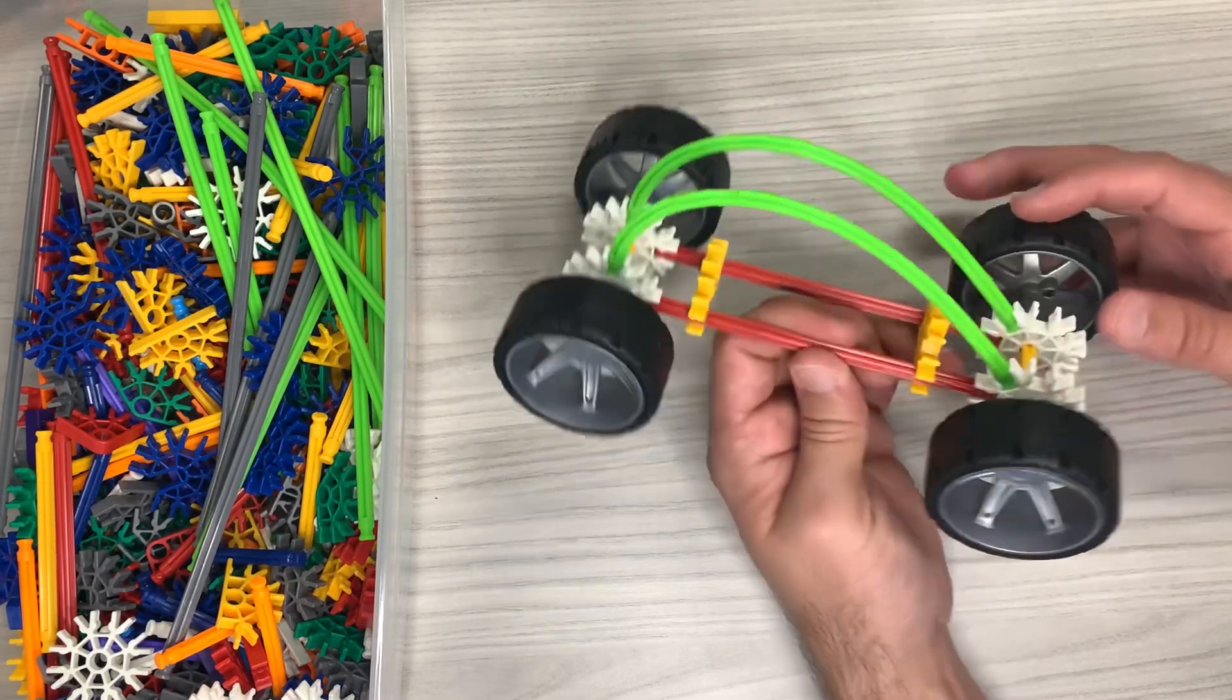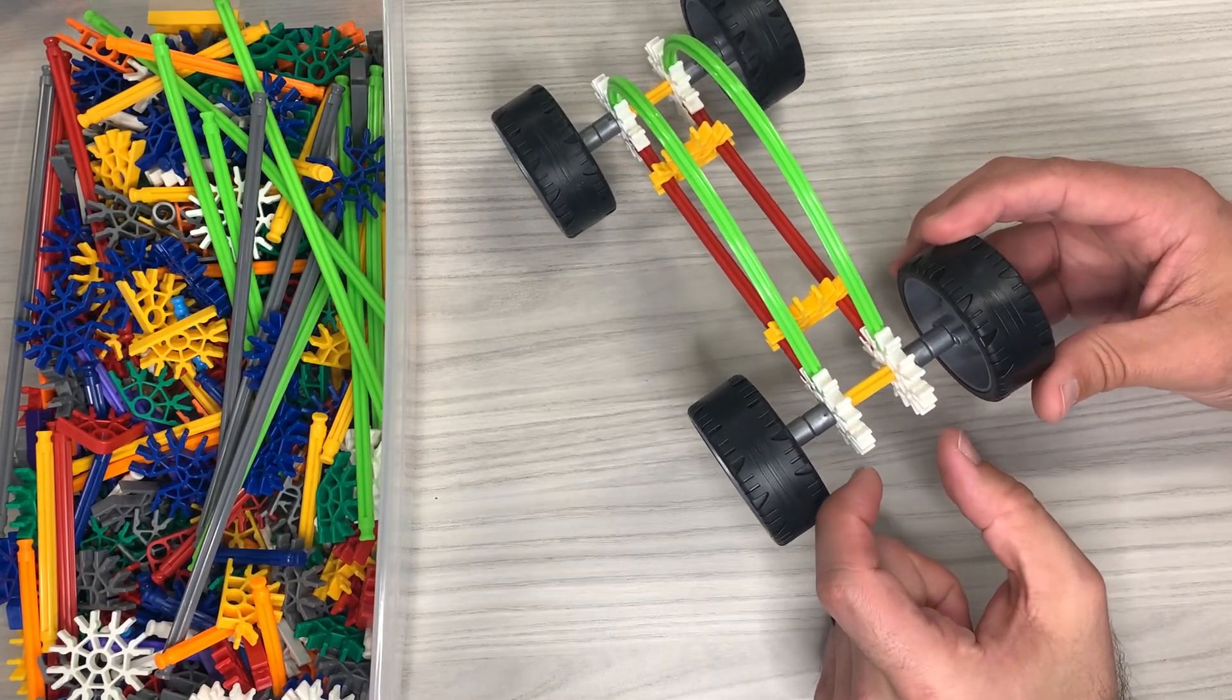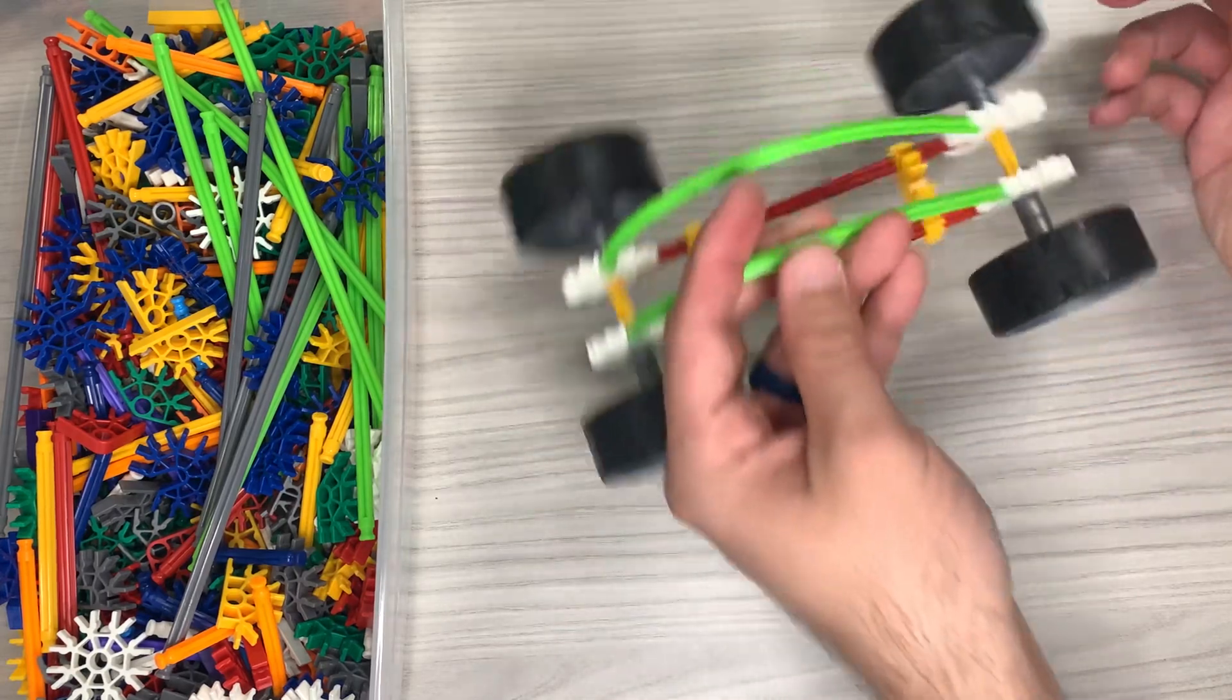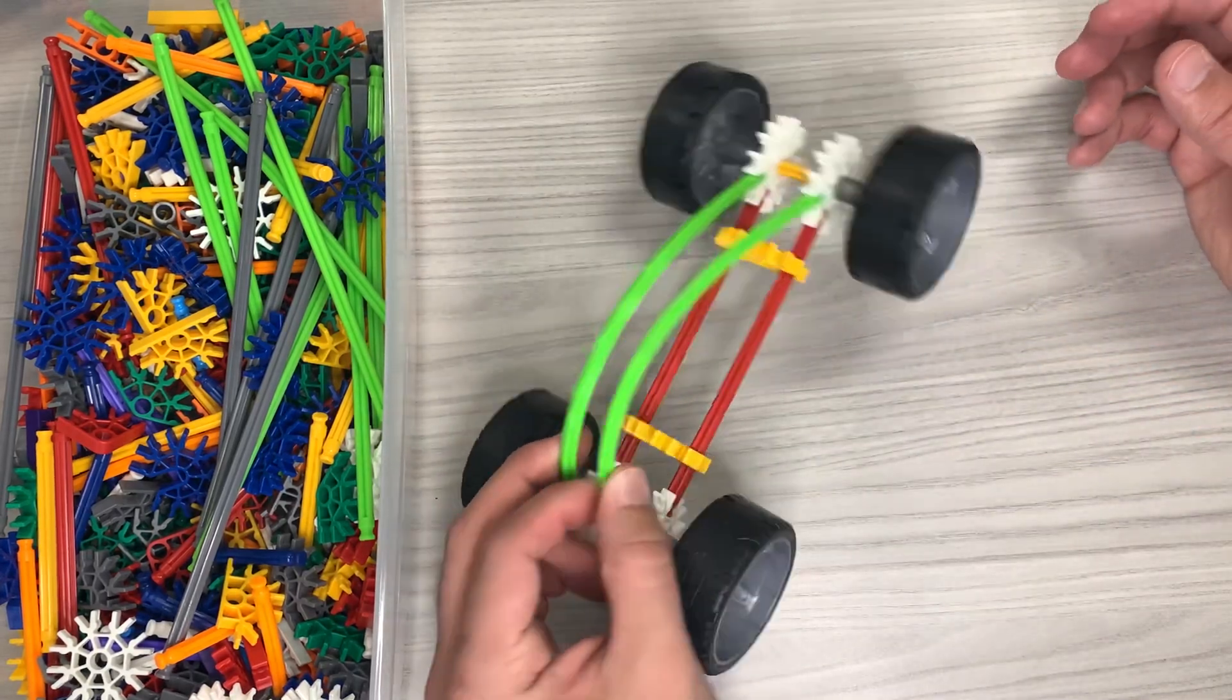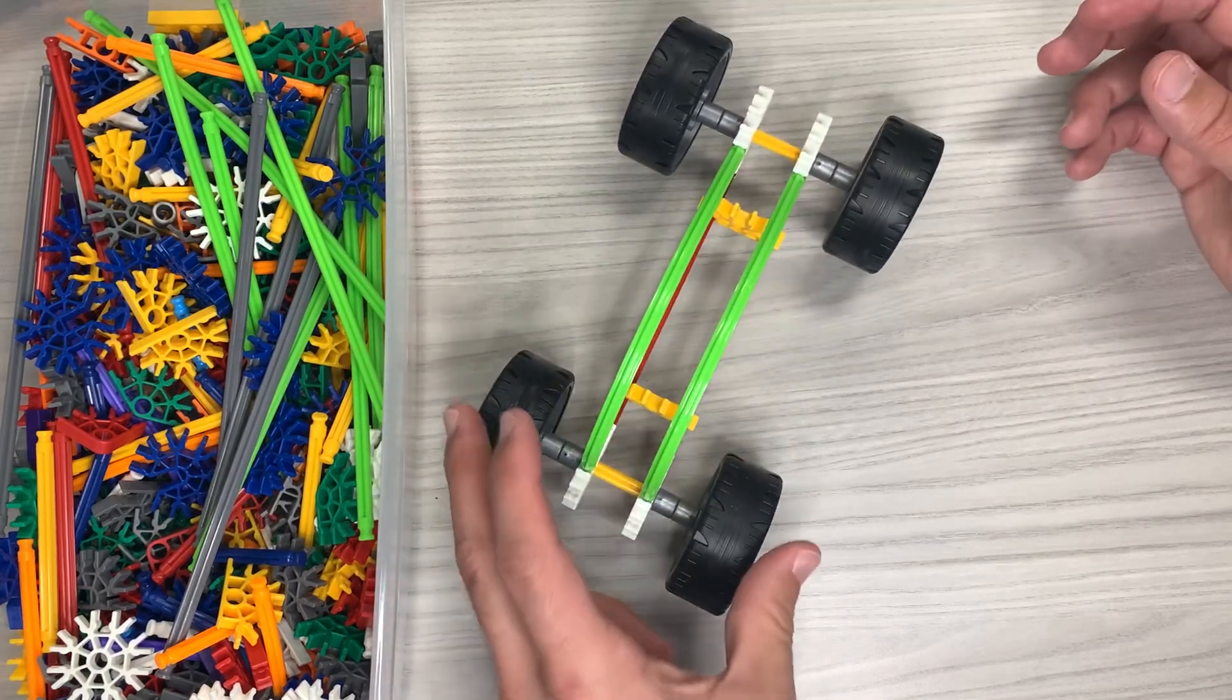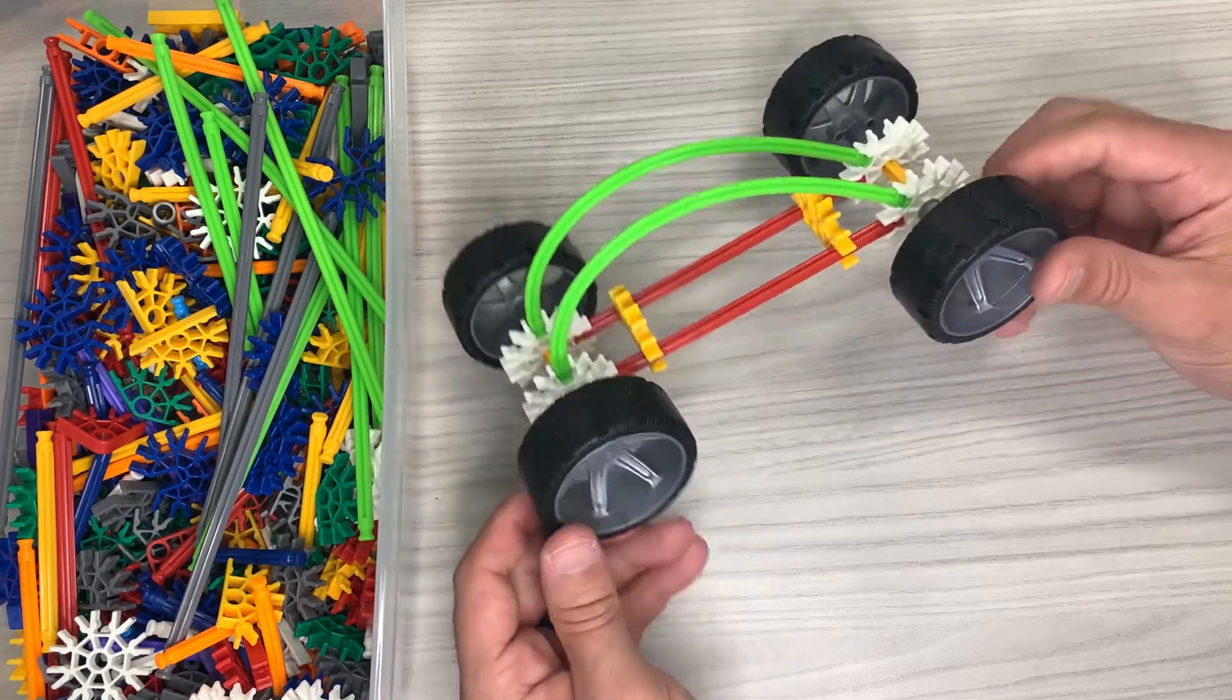Now another thing that we have is if we wanted to take these two tires off and put say a smaller blue rod and then connect the two smaller tires like how I did in the tractor video that'll also work and then you'll have two big tires and two small tires in the front. So there's plenty of things that you guys can do.